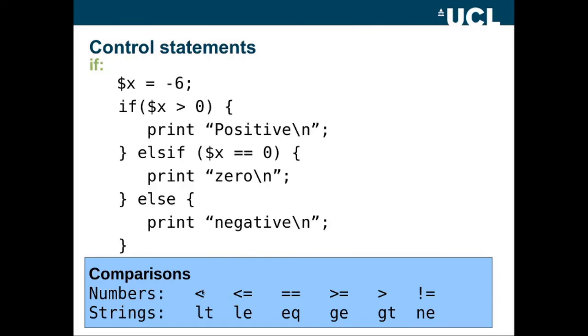And we have these different comparators which are different for numbers or strings. So when you compare strings, you're just comparing them alphabetically. So we can say less than or LT for a string, less than or equal to LE. Equal to, it's a double equals sign. So a single equals sign is assignment. A double equals sign is a comparator. So that's EQ for strings, greater than or equal to, greater than and not equal to.